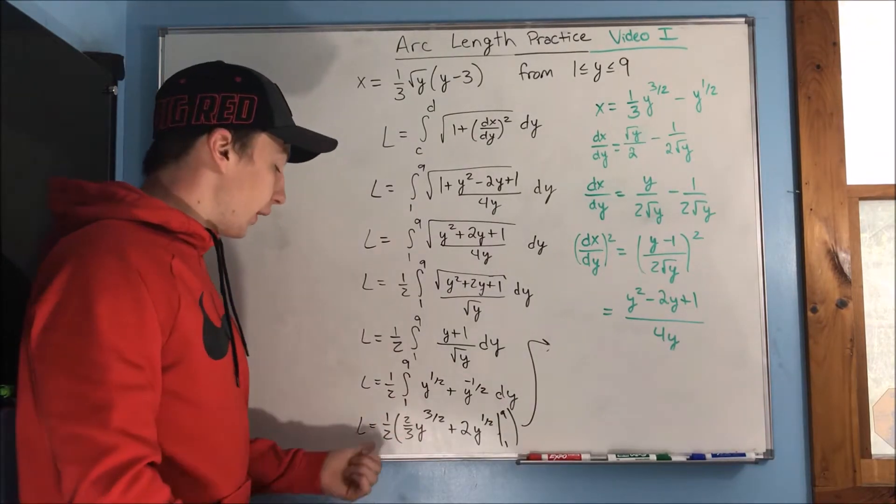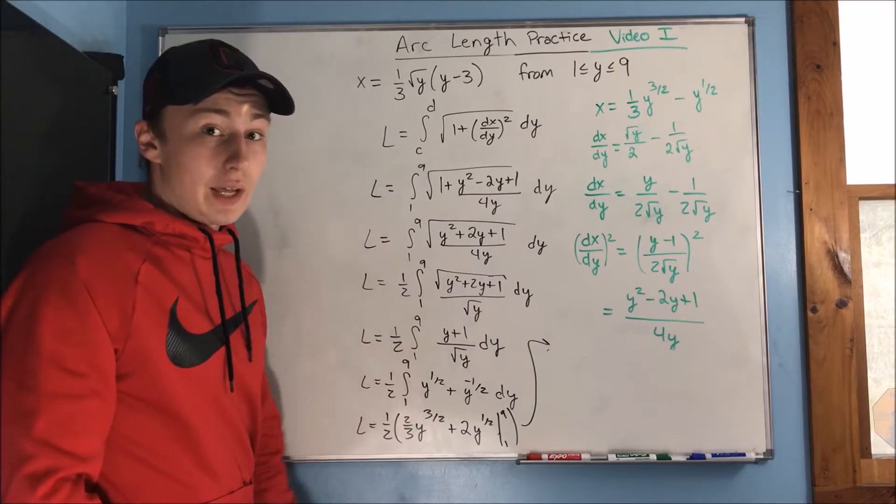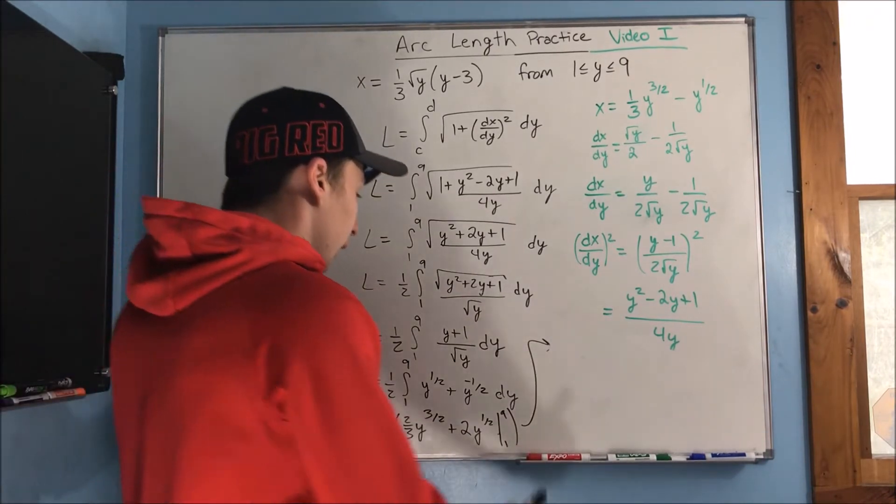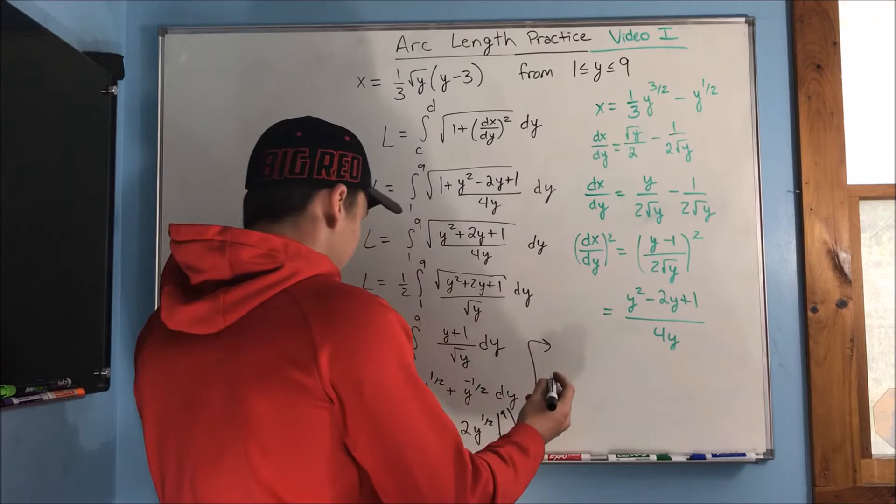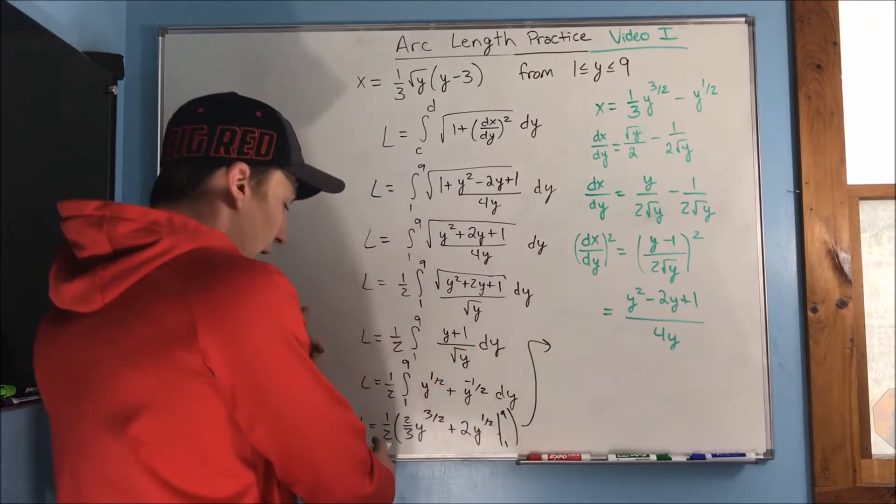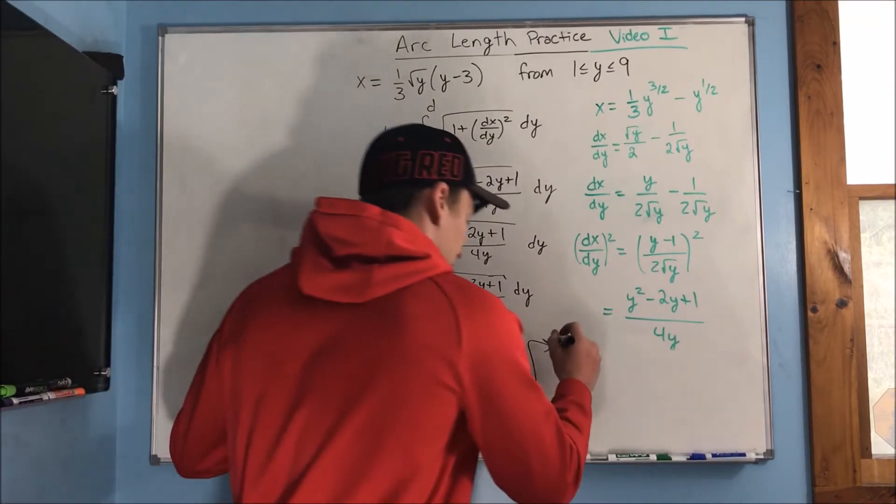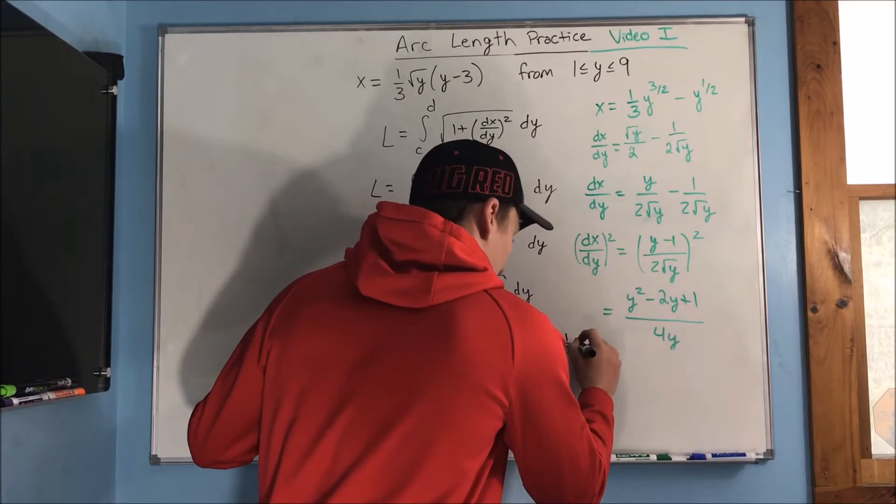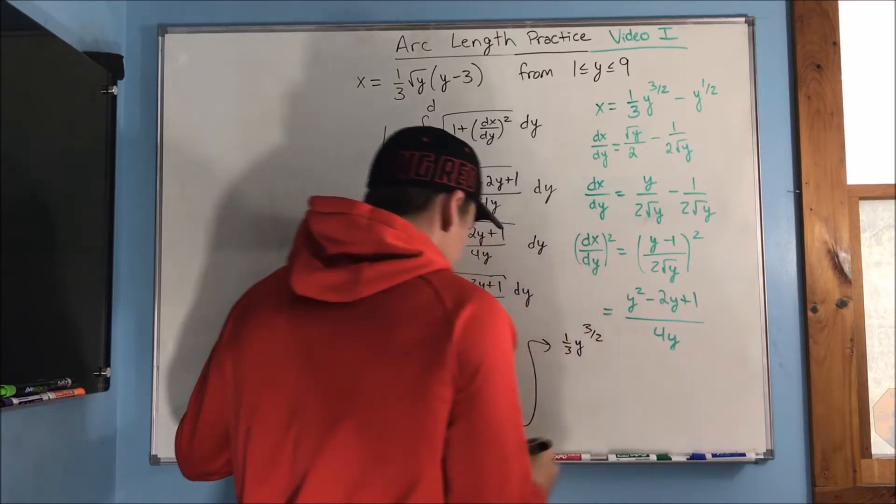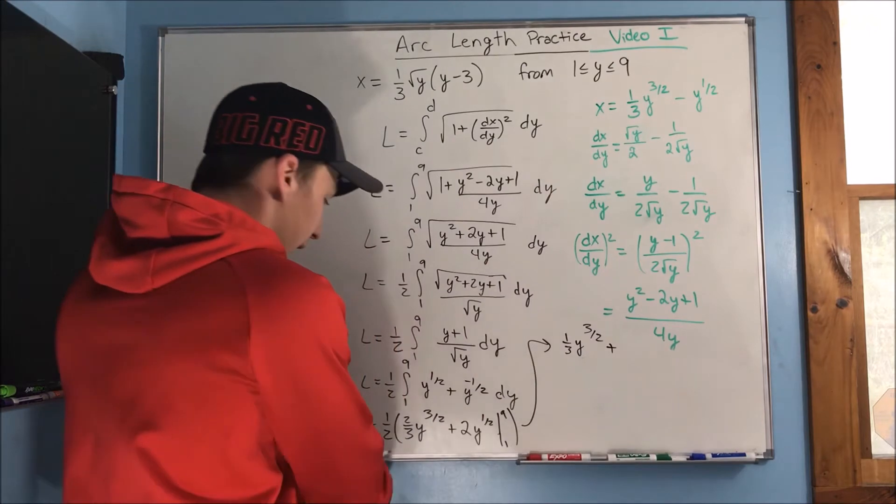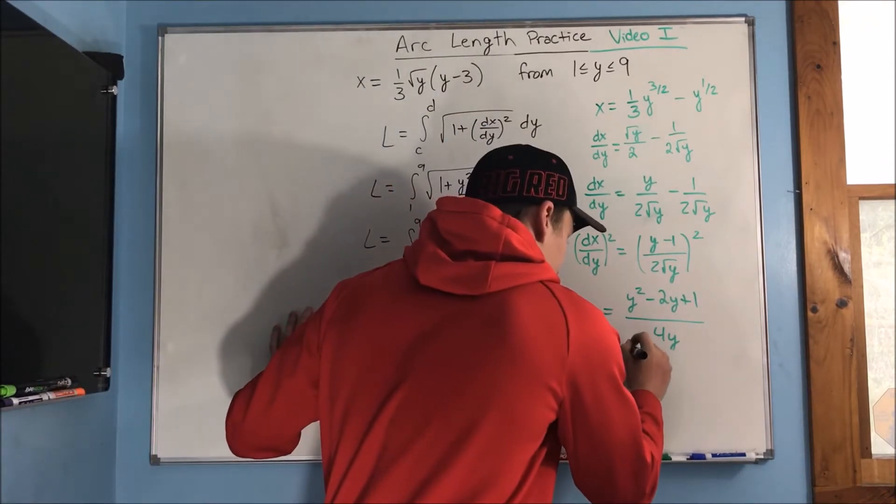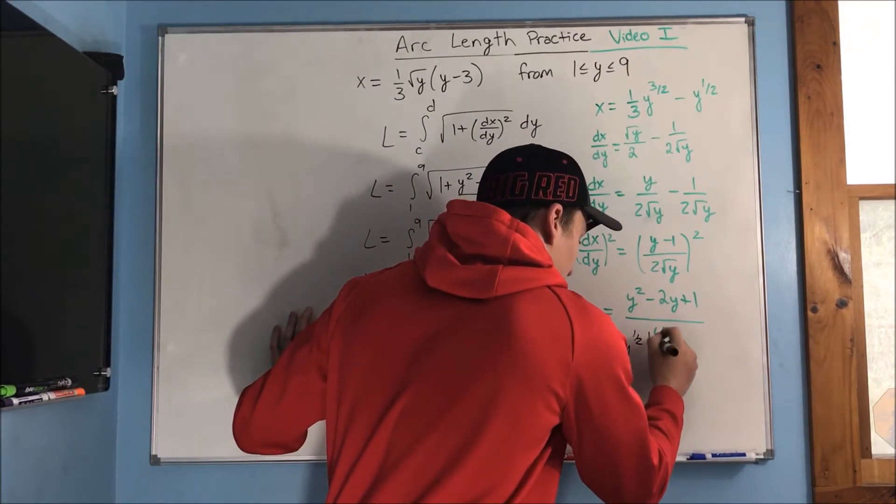So, before we do our evaluation step, I might as well just distribute this 1 half. It'll make it a little bit easier for us. Unless you want to do that at the end, you can. We get 1 half times 2 thirds is just going to be 1 third. So, we get 1 third y to the 3 halves plus, well, this will just be y to the 1 half. Evaluate that from 1 to 9.